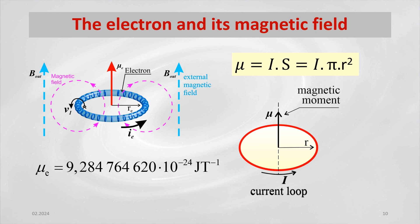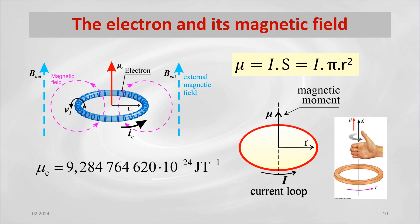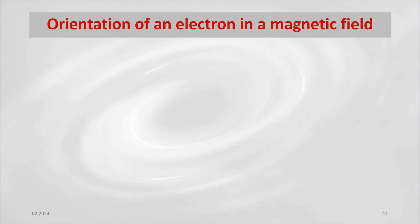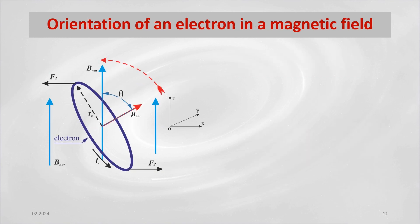We can demonstrate the origin of this force by using a model of the electron as a current loop. The electron modeled in this way, which can be associated with a closed current loop, will be subjected to a force when inserted into an external homogeneous magnetic field, which however is zero in the case of a closed current loop.